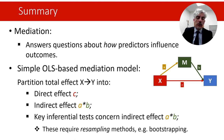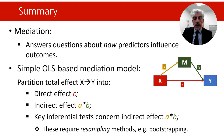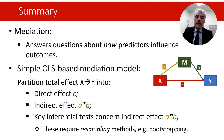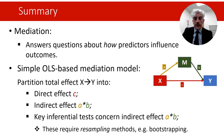Mediation answers questions about how predictors influence outcomes. I introduced a simple ordinary least squares-based mediation model where the total effect from a predictor x to an outcome y is partitioned into a direct effect c, and an indirect effect represented by the multiplication of paths a and b, which represents how the effect of x is transmitted to y through m. The key inferential tests concern the indirect effect a×b, requiring resampling methods such as bootstrapping or Monte Carlo to estimate confidence intervals.